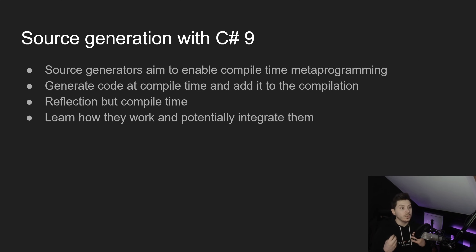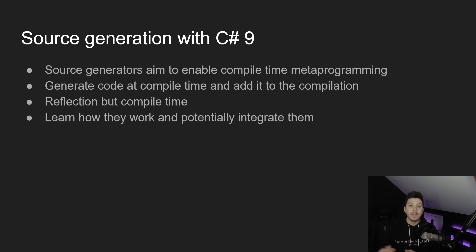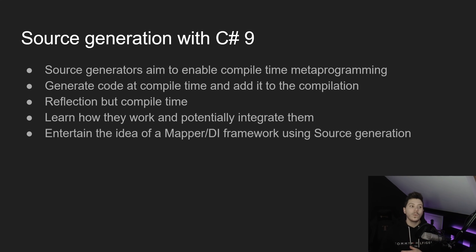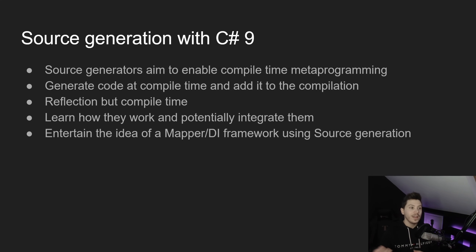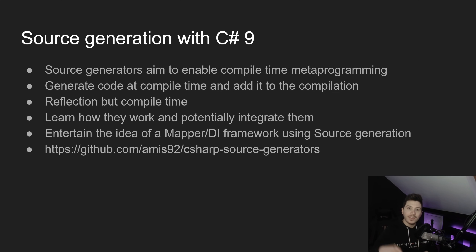What I want to do this year is learn how source generators work, learn how I can use them, and potentially integrate them with things I already have. We talked about Mapster and how it can generate the mapper using code generation. I want to see how we can transfer that into a DI framework using source generation. The .NET built-in DI framework uses dictionaries and some minimal reflection for the first instantiation of classes, which takes time. There are already multiple projects and even a DI framework using source generation, which I'll link in the description — it's really, really promising.